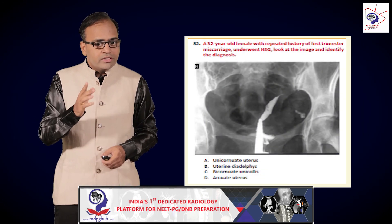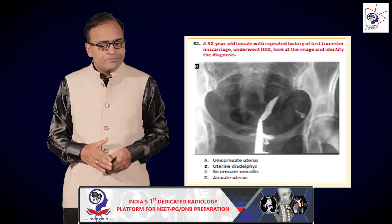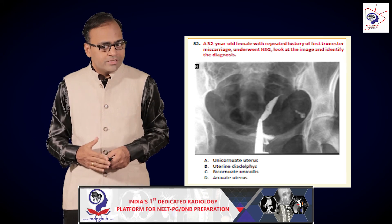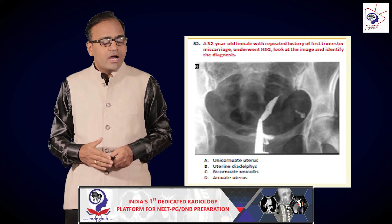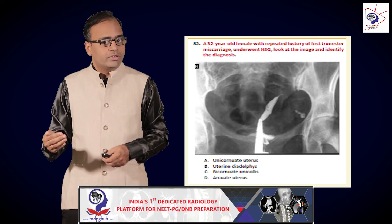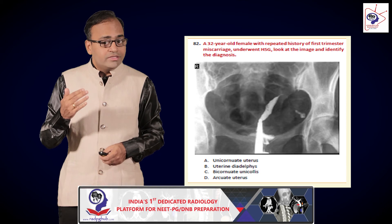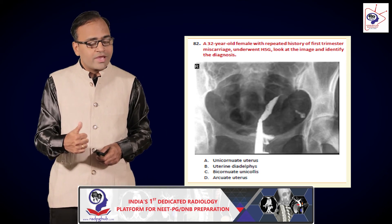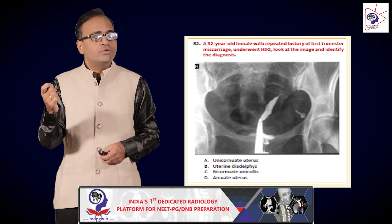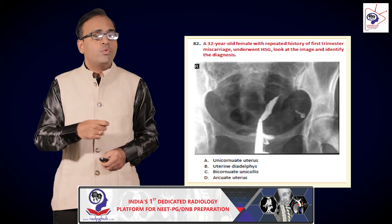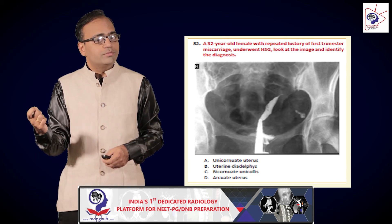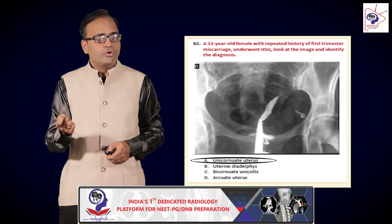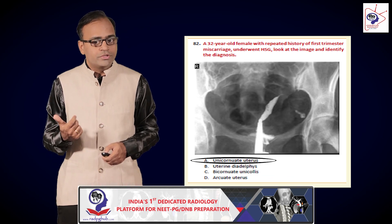A 32-year-old female with a history of recurrent first-trimester miscarriages undergoes hysterosalpingography — this is another recently asked exam question. A very specific appearance of the uterus shows only one horn with one fallopian tube emerging from it. This is what is called a unicornuate uterus.